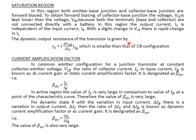Taking one of the IB curves, the dynamic output resistance of the transistor is given by keeping IB constant. In CB configuration, input resistance is low but in CE configuration it is slightly higher; whereas output resistance is very high in CB configuration and lower in CE configuration.